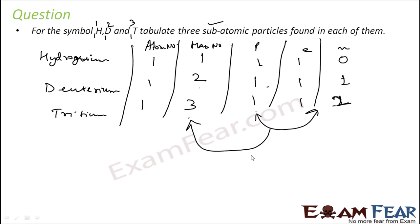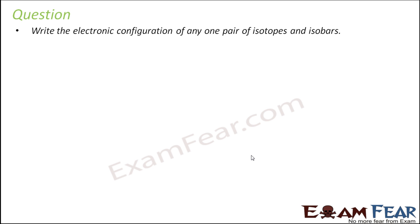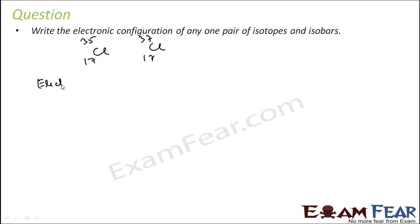So that is the tabular form of the three subatomic particles in each of protium, deuterium, and tritium. Now, write the electronic configuration of one pair of isotopes and one pair of isobars. For isotopes, the famous pair is chlorine — one with atomic mass 35 and the other with atomic mass 37. Electronic configuration depends on the number of electrons. Since both have atomic number 17, the electronic configuration of both is 2, 8, 7.